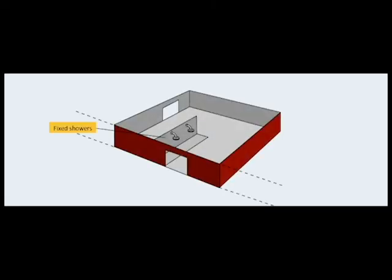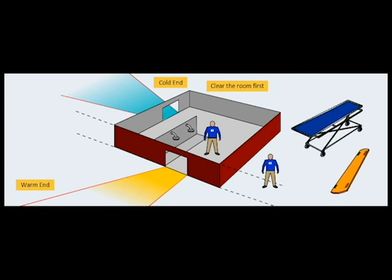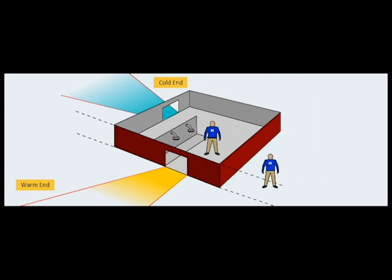Performing decontamination in a fixed facility offers some advantages over portable equipment when it comes to preparation time. But several steps need to be taken before introducing patients into the system. Clear the room of all non-essential equipment. Turn on the showers and adjust the water temperature. Appropriately place solid waste collection containers throughout the area. Turn on the air venting system and test it for function.